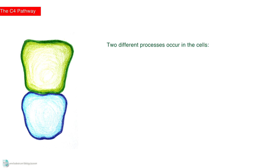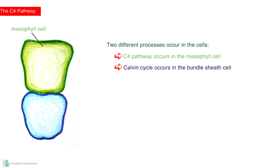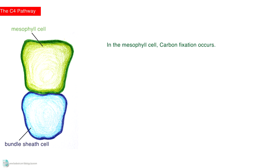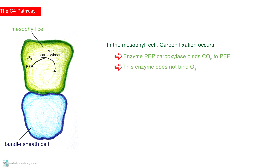Two different processes occur in these cells. The C4 pathway occurs in the mesophyll cells, while the Calvin cycle occurs in the bundle sheath cells. In the mesophyll cell, carbon fixation occurs. An enzyme called PEP carboxylase binds carbon dioxide to PEP. This enzyme does not bind oxygen, and no Rubisco is found here. A product called malate is produced, which has four carbons — the reason why this pathway is called the C4 pathway.